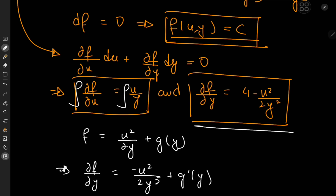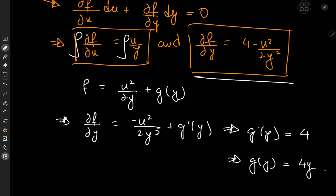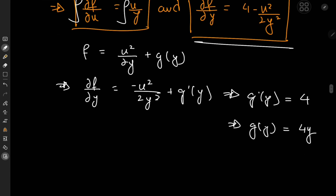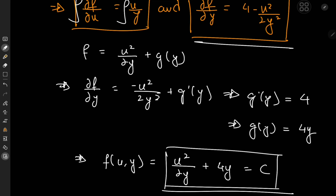According to our system of partial differential equations, ∂f/∂y should be (4 minus u²)/(2y²). On comparison, we see that the derivative of g with respect to y equals 4, which implies g(y) equals 4y. So our function f(u, y) is u²/(2y) plus 4y, and this equals some constant of integration c.